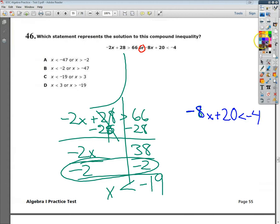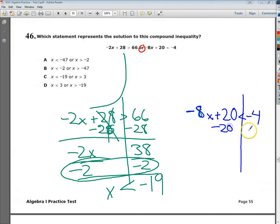On the other side of it, I'm going to draw a line on this one. I do minus 20 on this side and minus 20 on this side. Combine these terms together, get negative 24.